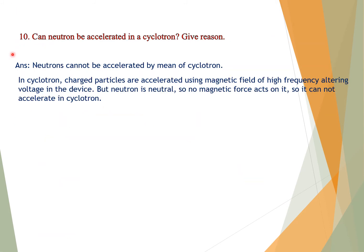Question number ten: Can a neutron be accelerated in a cyclotron? Give reason. Answer: Neutrons cannot be accelerated by means of a cyclotron. In a cyclotron, charged particles are accelerated using a high-frequency alternating voltage in a magnetic field. But a neutron is neutral, so no magnetic force acts on it and it cannot be accelerated in a cyclotron.